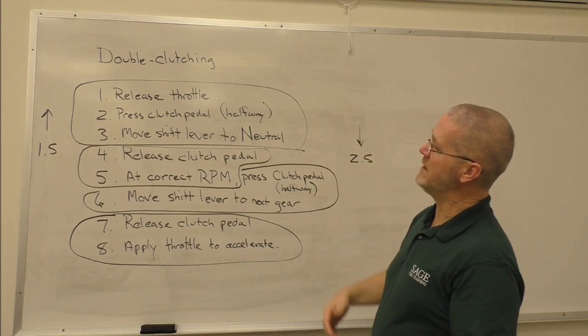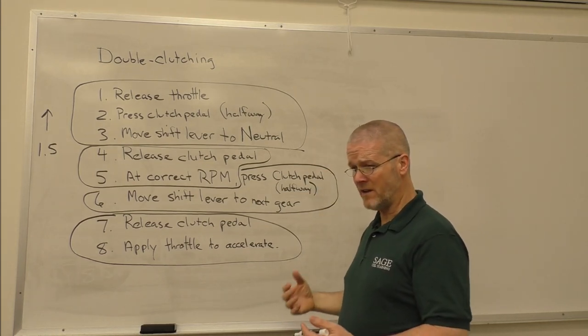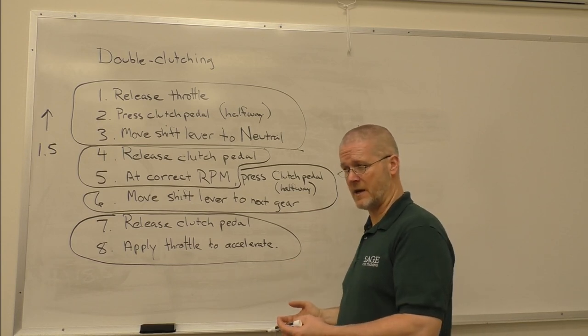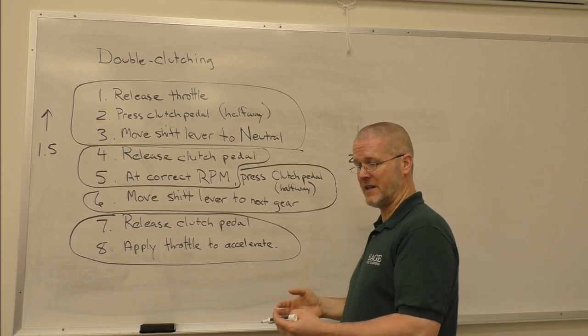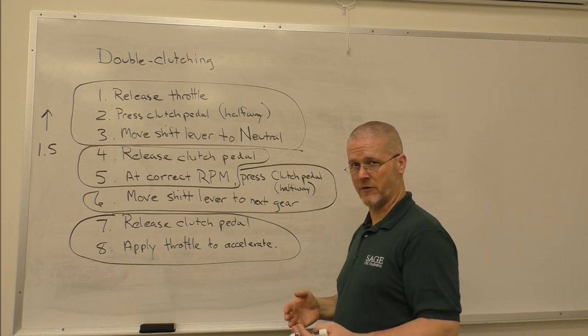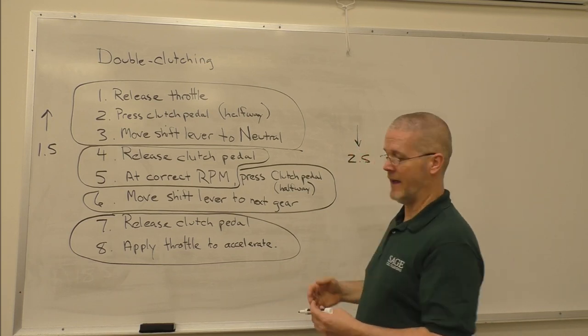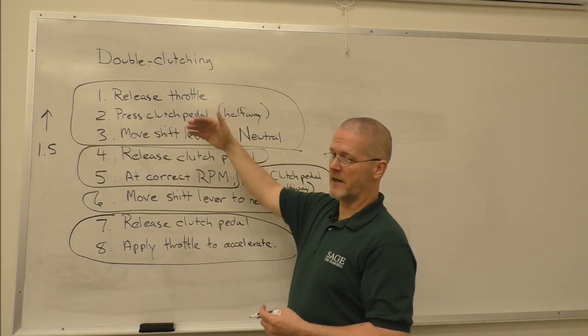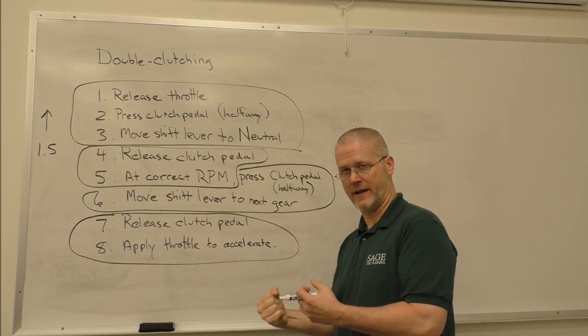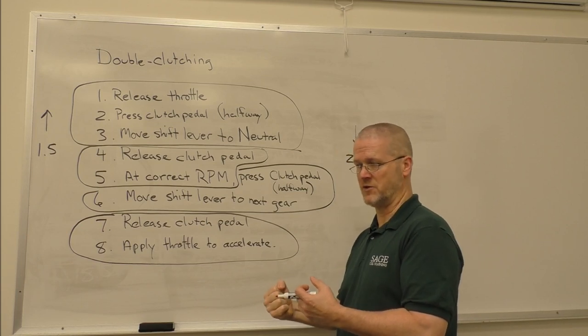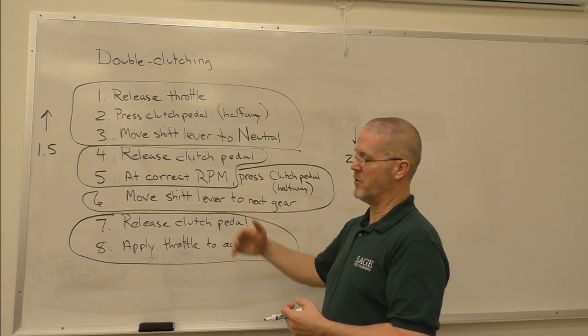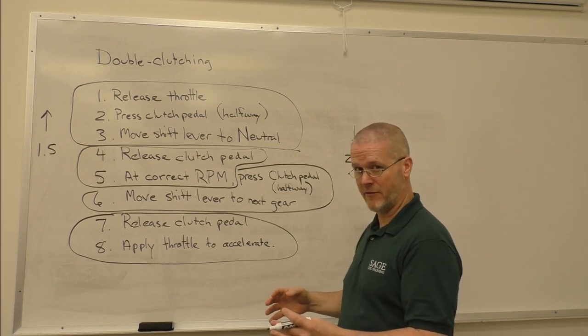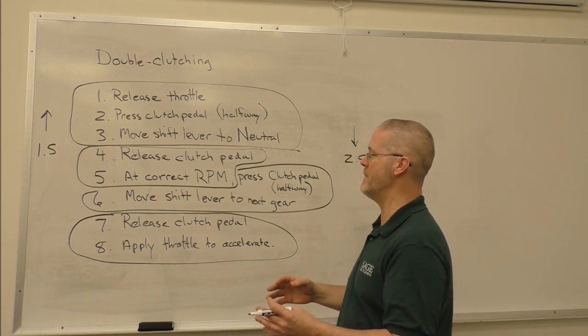So why do we double clutch? We double clutch because without synchronizers in the gearbox, the RPM matching has to come from you, the driver, instead of the machine. Because it's never going to be perfect, we need to open the clutch to take it out of gear so that we're not dragging against a lot of friction from residual torque. When we go to put it in the new gear, we need to open the clutch to get rid of impact and friction from a less than perfect match.